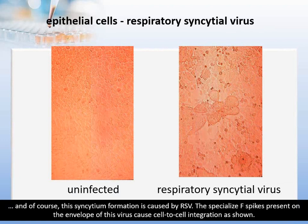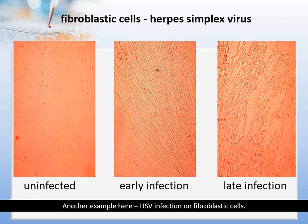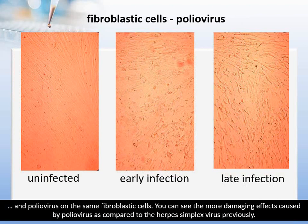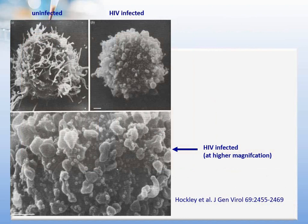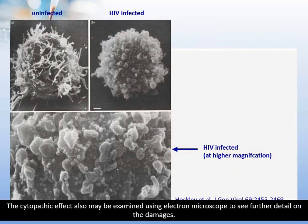This is syncytium formation caused by RSV, respiratory syncytial virus. The specialized F spikes present on the envelope of this virus cause cell-to-cell integration as shown on the right image. Another example is HSV infection on fibroblastic cells and poliovirus on the same fibroblastic cells. You can see the more damaging effects caused by poliovirus compared to the herpes simplex virus.